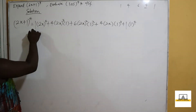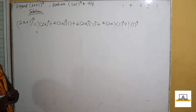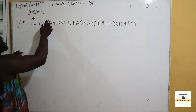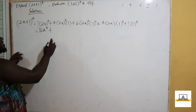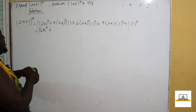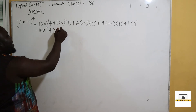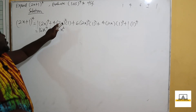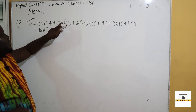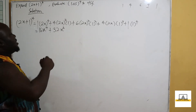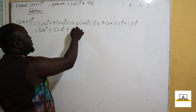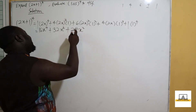Now we compute the solution. 2^4 = 2×2×2×2 = 16, so we have 16x^4. Then 2^3 = 8, times coefficient 4 gives 32, so we have 32x^3. Then 2^2 = 4, times coefficient 6 gives 24, so we have 24x^2.